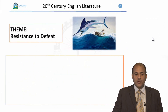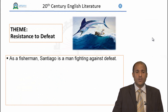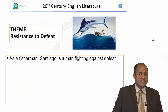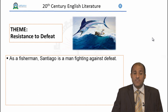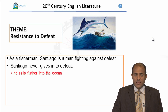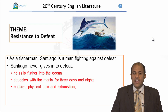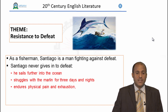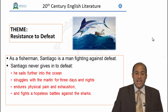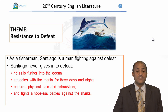Now we have finished the characters and will move on to the themes — the central messages conveyed by the writer Ernest Hemingway. The first theme is resistance to defeat. Santiago is a man fighting against defeat: he sails far into the ocean, struggles with the marlin for three days and nights, endures physical pain and exhaustion, and fights hopeless battles against the sharks. These four instances prove that Santiago never gives in to defeat.